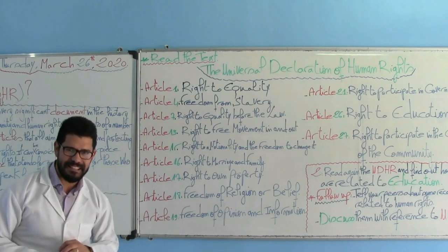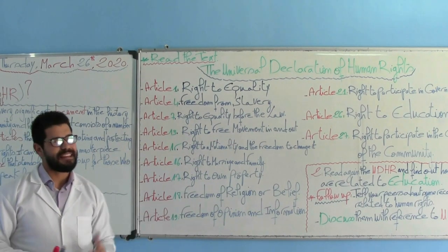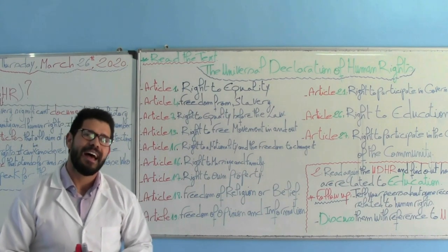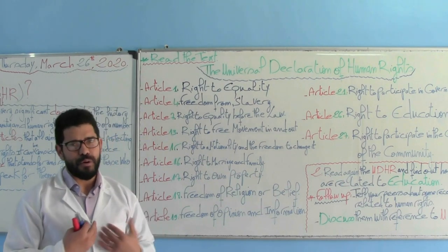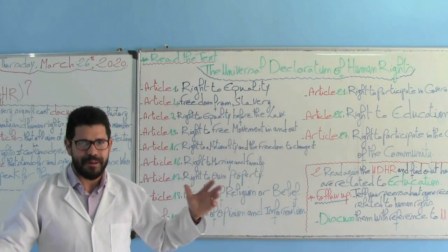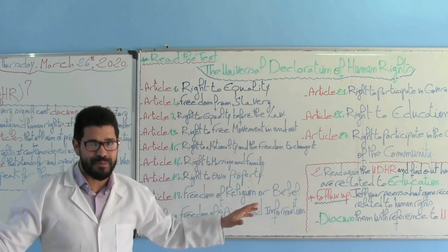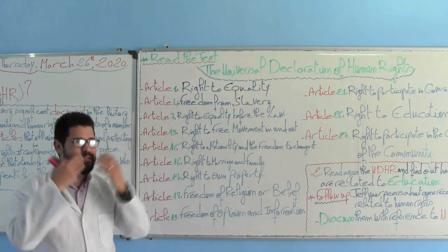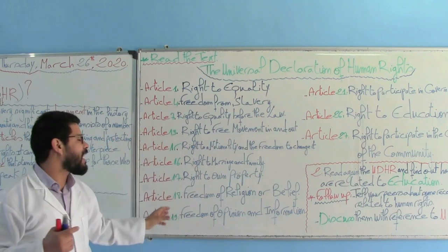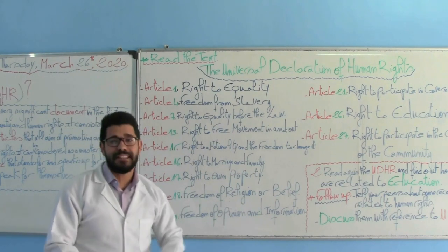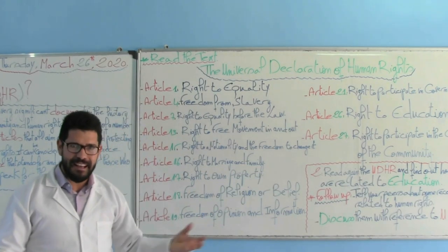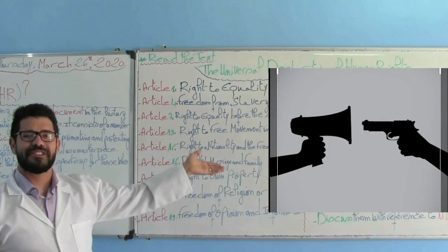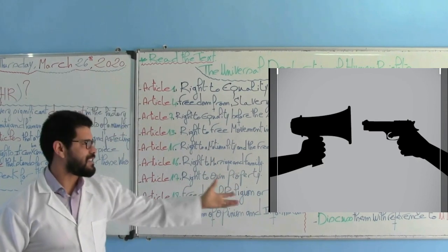Article number 19: Freedom of opinion and information. I'm free to express my opinion the way I want. Nobody has the right to stop me. It's my right to express my opinion and voice the ideas that I believe in, and I have the right to get different pieces of information from different social media — audio, visual or written ones. This is the picture that we can use to explain this article.